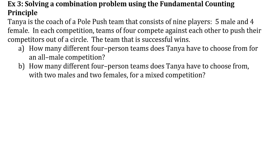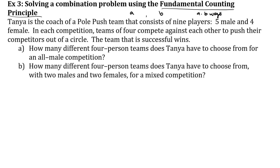Example number three: solving a combination problem using the fundamental counting principle. We know that if we have A of something and B of something, we have A times B ways of both. That's our fundamental counting theorem.